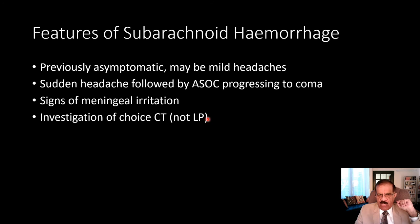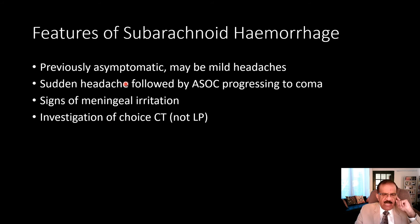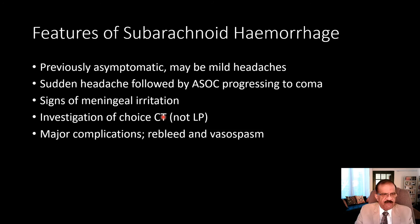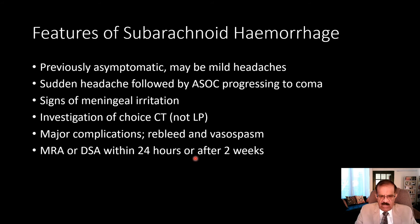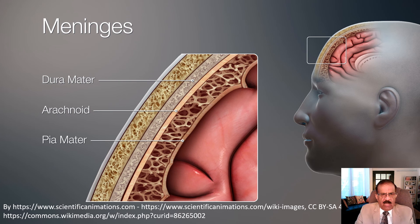Signs of meningeal irritation like Kernig's sign, neck stiffness, and Brudzinski's neck flexion and leg flexion tests will be positive — just like meningitis. Investigation of choice is CT scan, not lumbar puncture. In subarachnoid hemorrhage, CT scan alone is good enough — unlike meningitis where CSF examination is also necessary. Major complications are re-bleed and vasospasm. MR angiography or digital subtraction angiography may be done within 24 hours to determine congenital abnormalities. Clipping or surgery of the aneurysm is the treatment of choice.